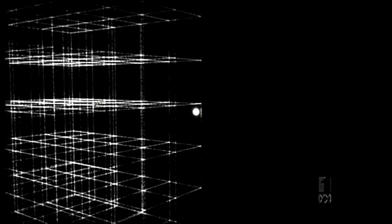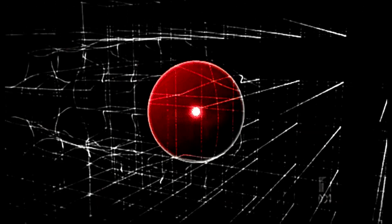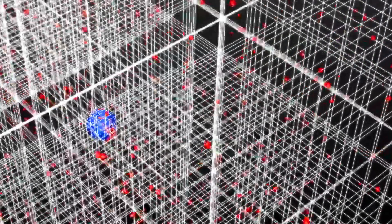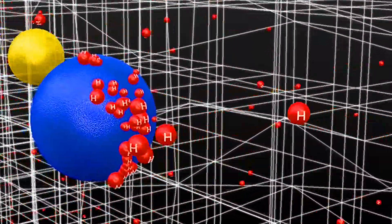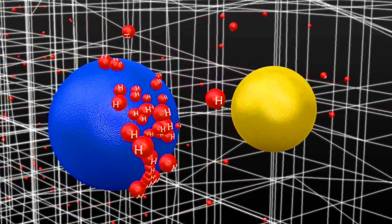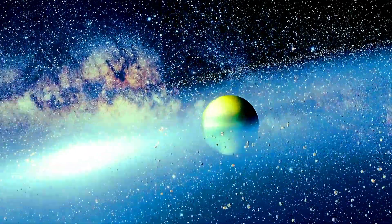As particles traverse the Higgs field, they encounter resistance directly related to their mass. This interaction is clarified by coupling, which is aided by Higgs bosons. The Higgs field's significance lies in its capacity to provide mass to tiny particles, facilitating the formation of atoms, molecules, planets, and even galaxies.